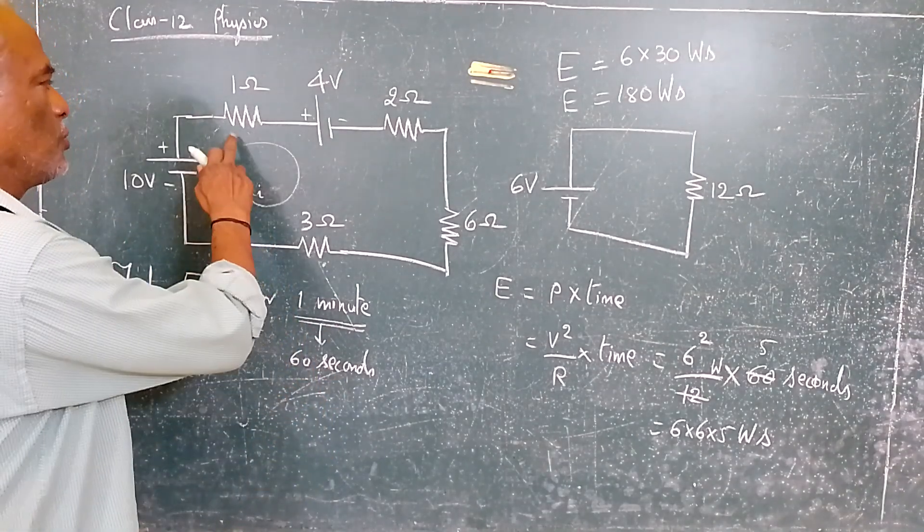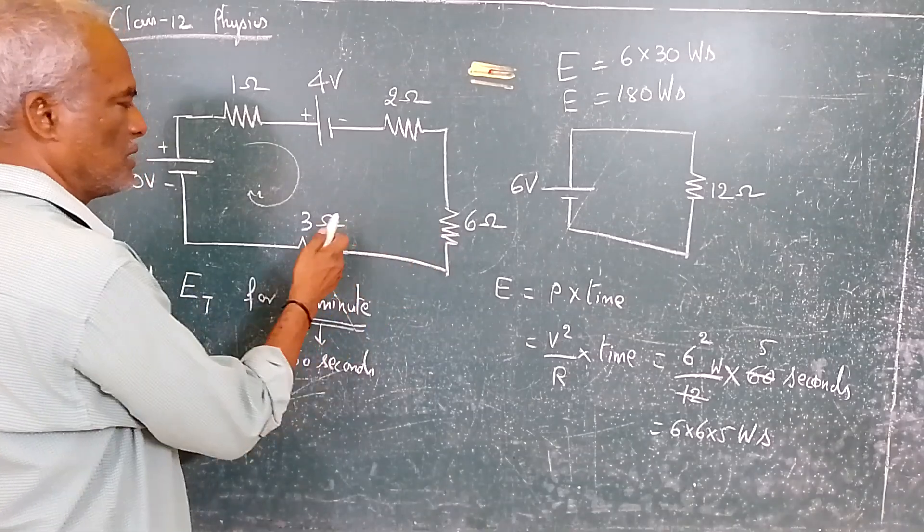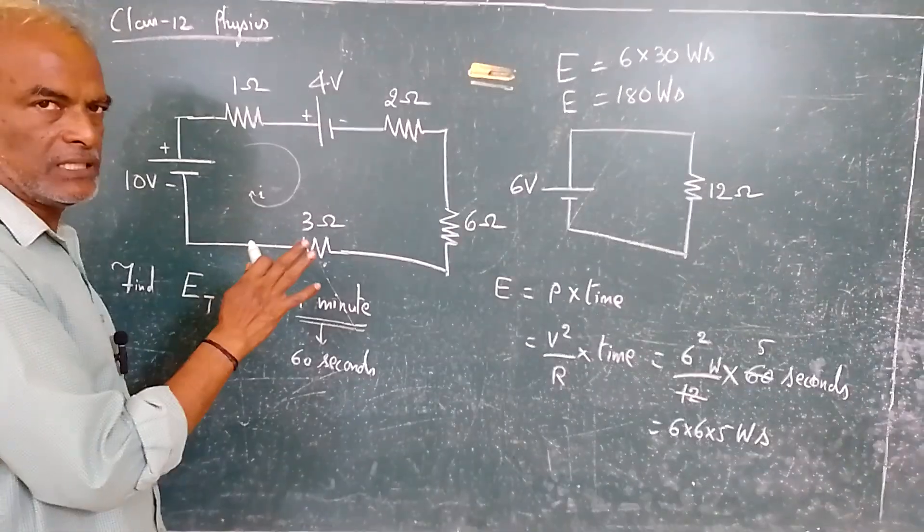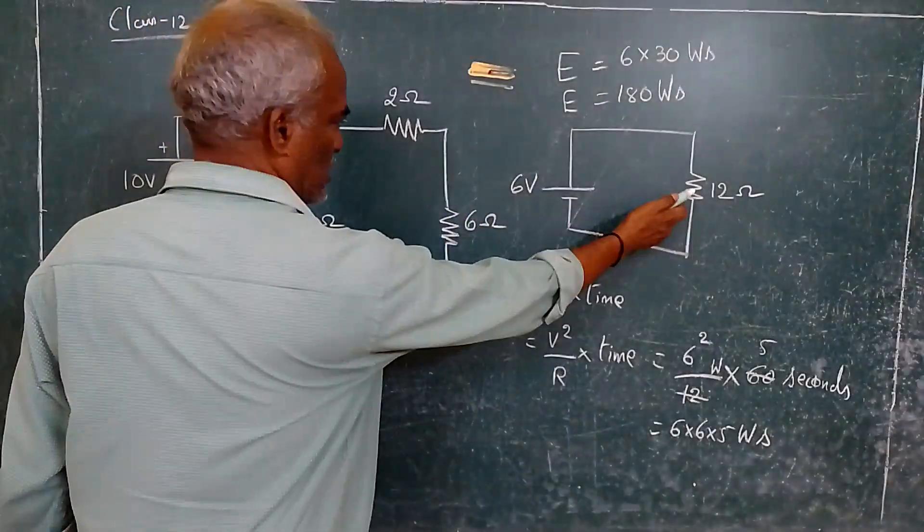Now if you carefully watch, this 1 ohm, 2 ohms, 6 ohms and 3 ohms all are connected in series. Therefore the total resistance is 12 ohms.